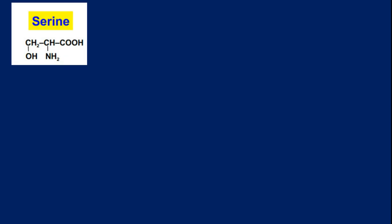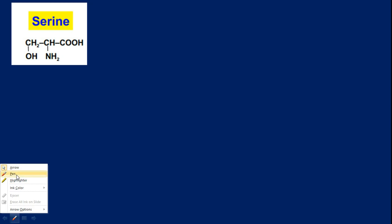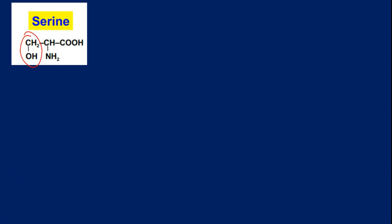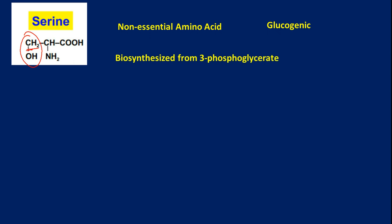Next is serine. In case of serine, it looks very close to alanine — the only difference is a hydroxy group attached to the carbon. If we have CH3 there, it becomes alanine. Serine is a non-essential amino acid because it can be biosynthesized from alanine or even from glycine. It is a glucogenic amino acid.